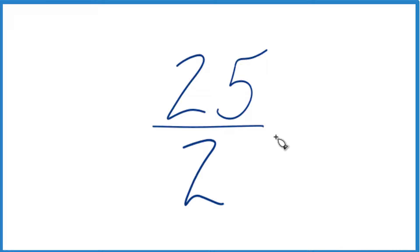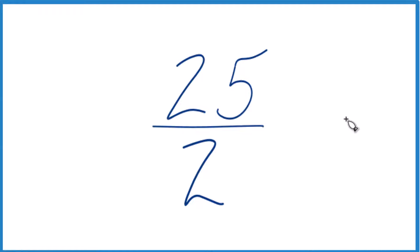We can see that 2 goes into 25 — 2 times 10 would be 20, 2 times 12 would be 24, pretty close — so right around 12.